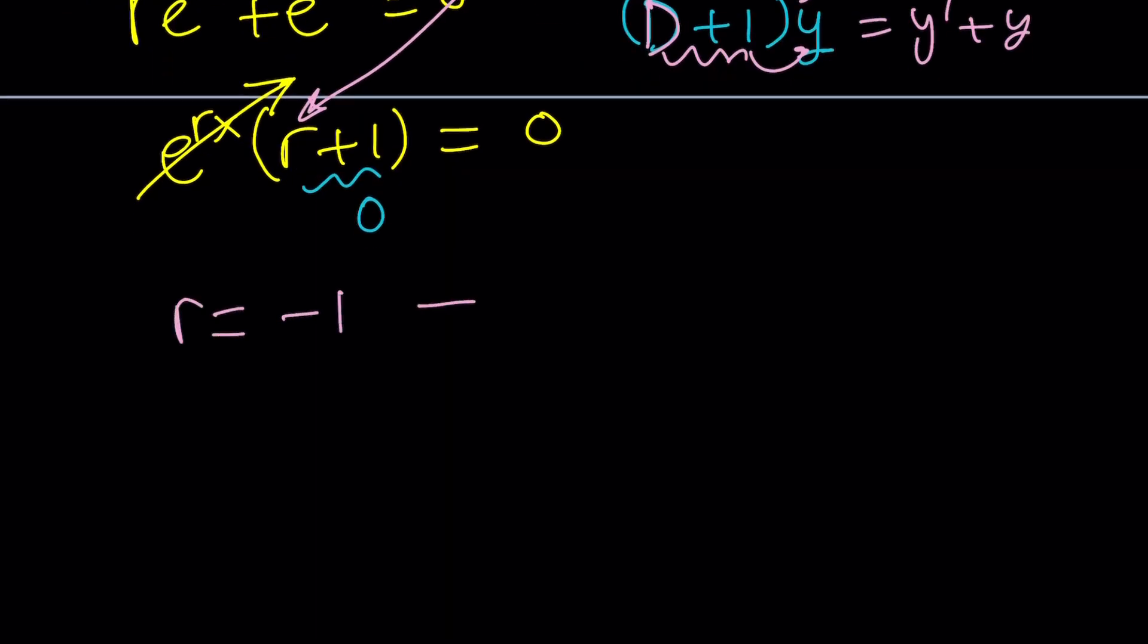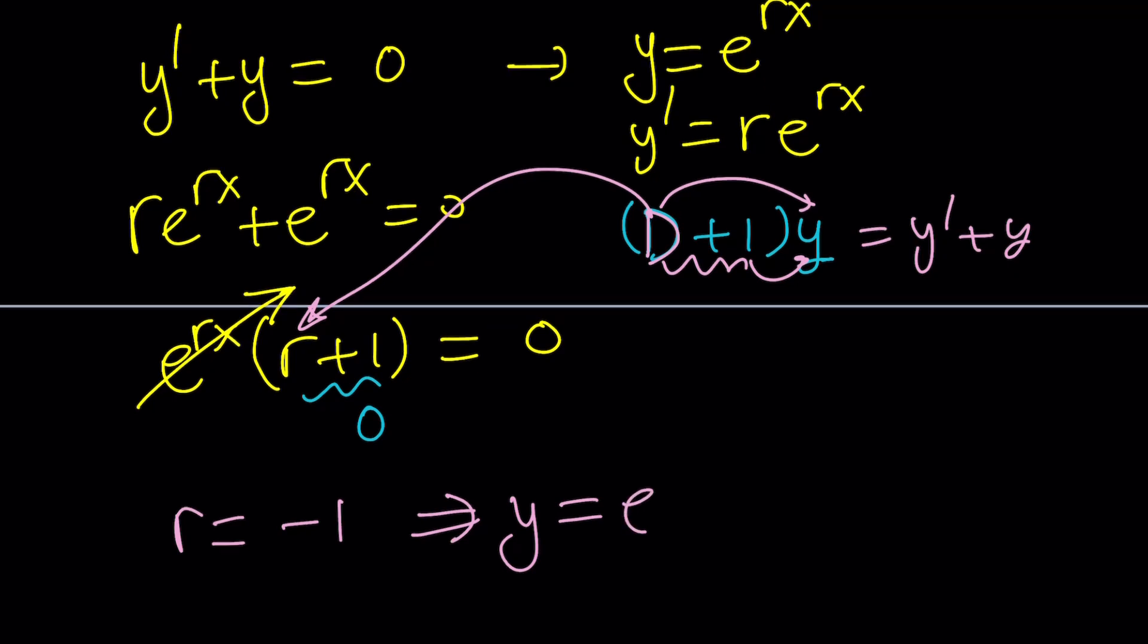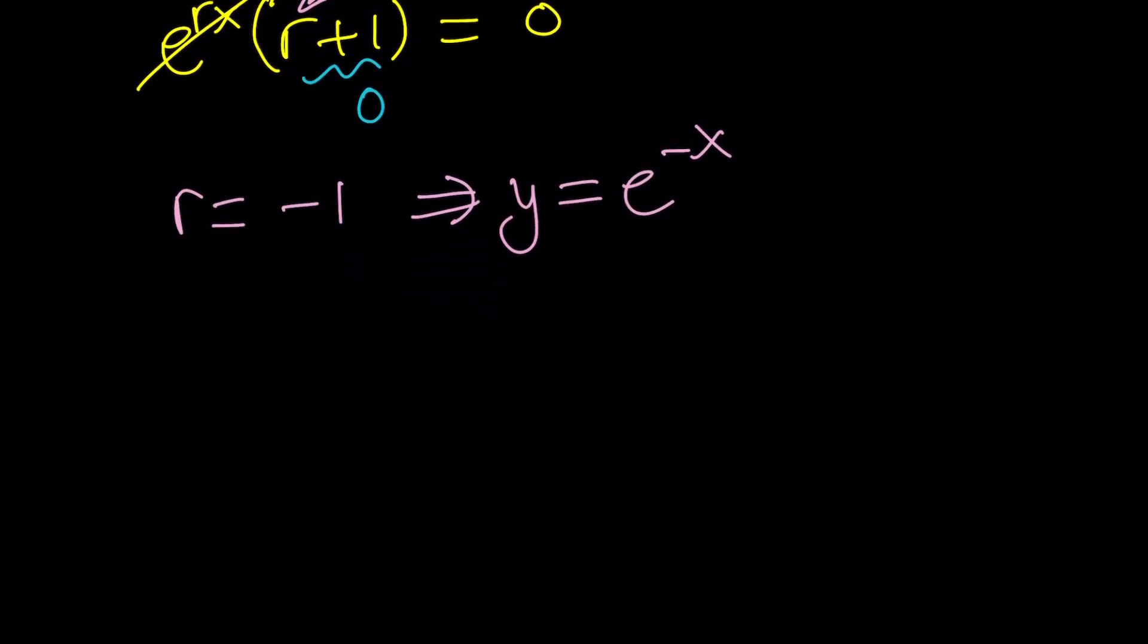From here, we get r = -1, which implies that y = e⁻ˣ is a solution. This is the homogeneous solution, yₕ. But to write it in a more general case, I'm going to use a constant c₁ times e⁻ˣ, because if e⁻ˣ is a solution, c₁e⁻ˣ is definitely a solution too, because it doesn't change the characteristic equation.